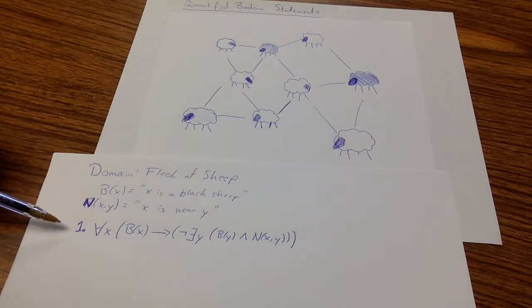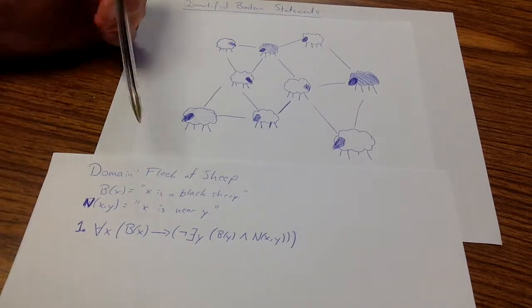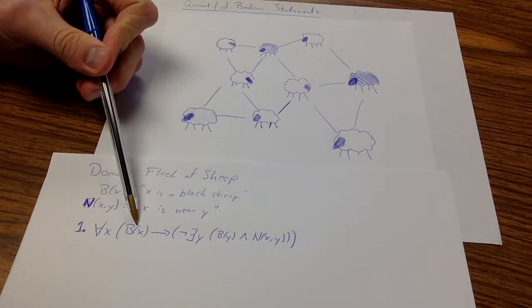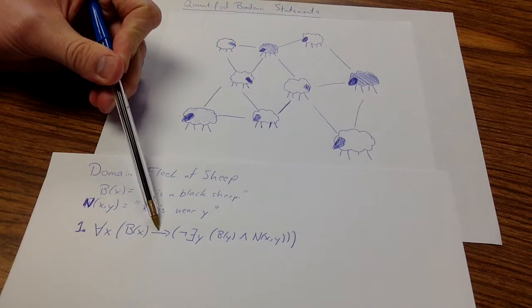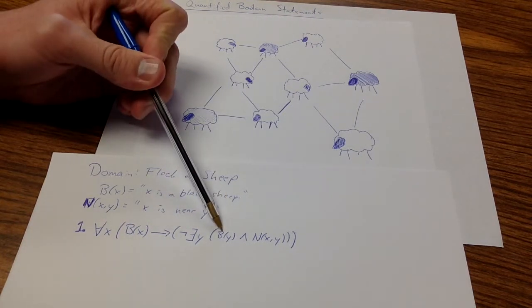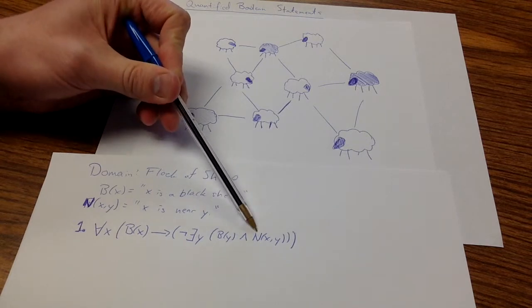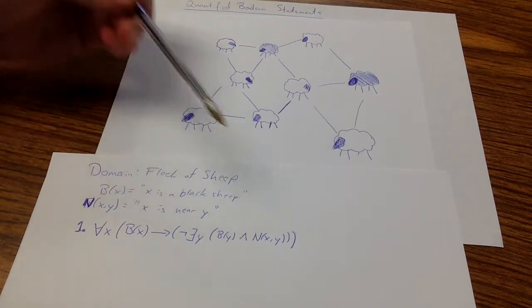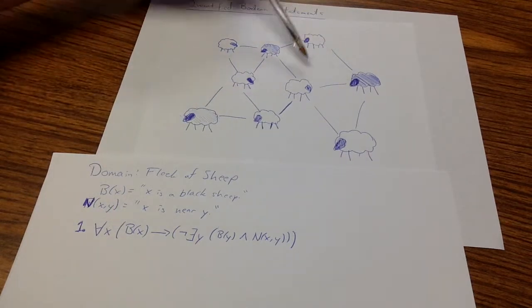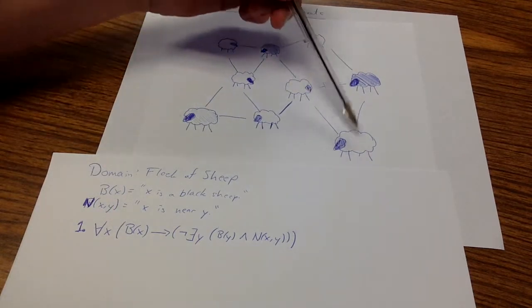Let's consider quantified Boolean statement one. Let's unpack this statement carefully. What it's saying, for all x, if x is a black sheep, then there does not exist a sheep y such that y is a black sheep and x is near y. And this is a true statement because if I look at any black sheep, any of the nearby sheep are white, not black.